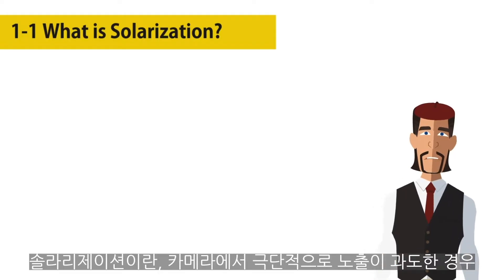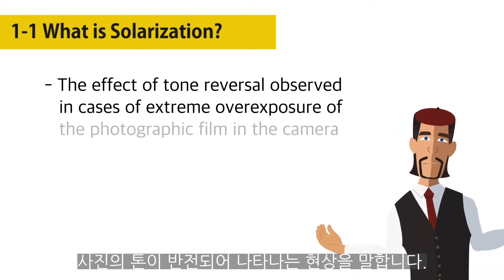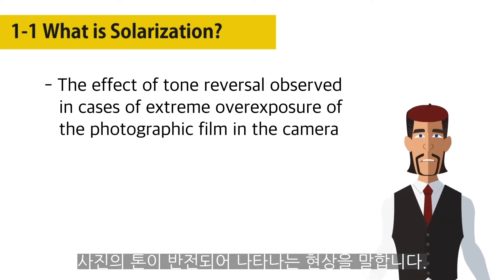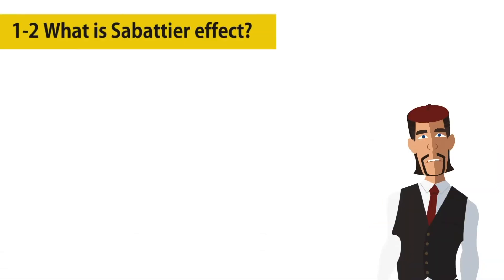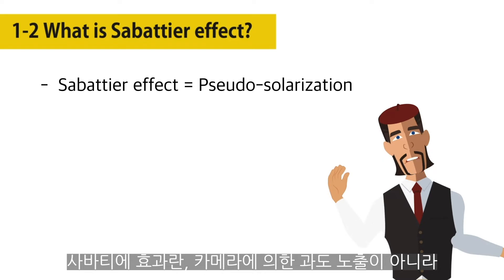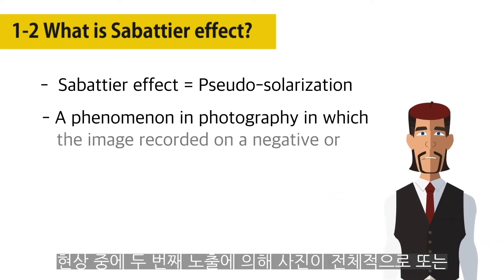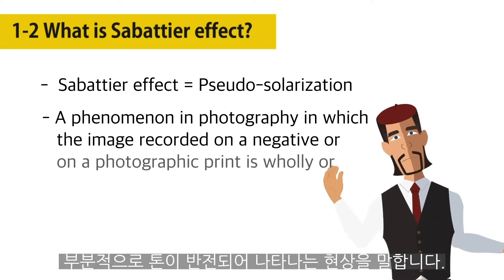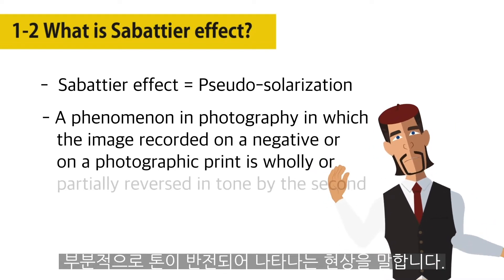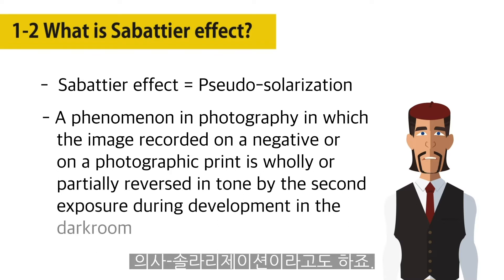The term solarization is used to describe the effect of tone reversal observed in cases of extreme overexposure of the photographic film in the camera. The Sabatier effect, also known as pseudo-solarization, is a phenomenon in photography in which the image recorded on a negative or on a photographic print is wholly or partially reversed in tone, not by the camera but by a second exposure during development in the darkroom.